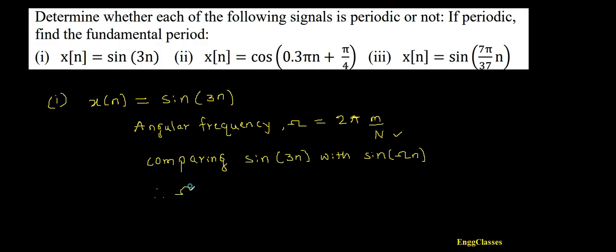Therefore, the angular frequency omega is equal to - just compare - I would get 3. Its angular frequency is 3 now. Can I express this omega in terms of 2 pi times m divided by capital N? That is the question.